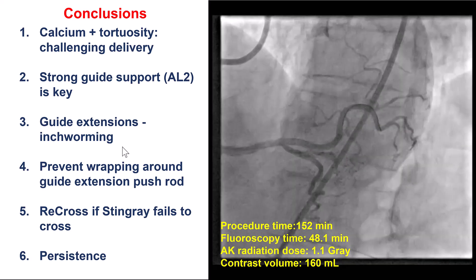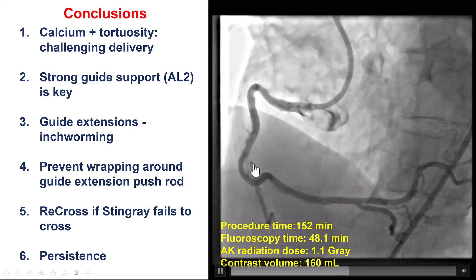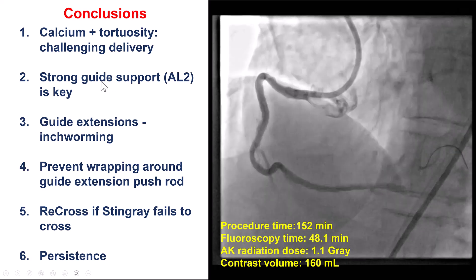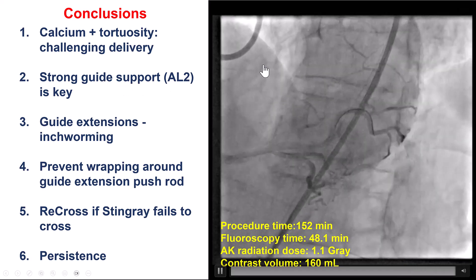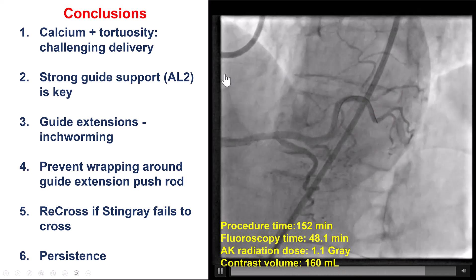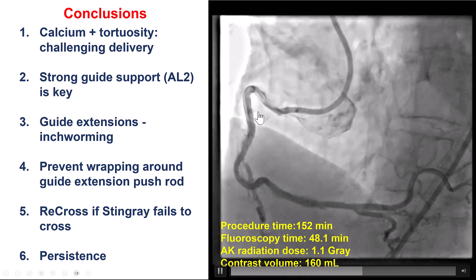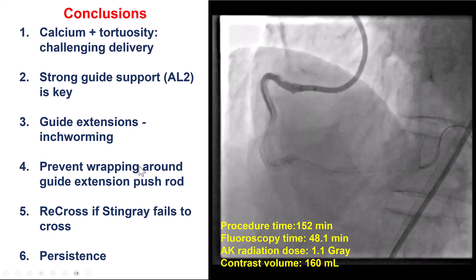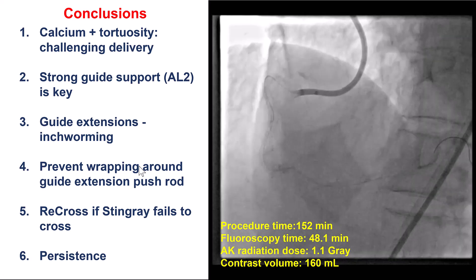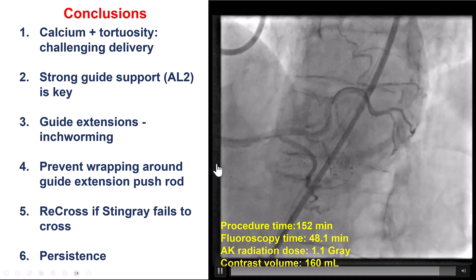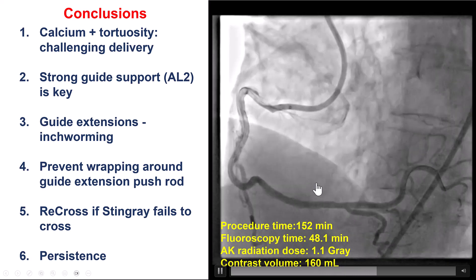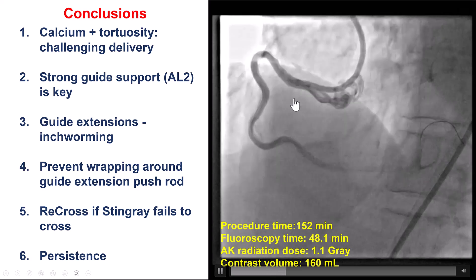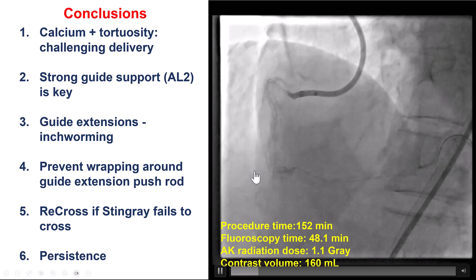In summary, this case demonstrates the adverse impact of calcification on tortuosity, with very extreme bends in the right coronary artery challenging both wire crossing and equipment delivery. For cases like this, there is no substitute for achieving very strong guide support — here the Amplatz Left 2 was advanced all the way to the tip of the Seferitz crook. Guide extensions delivered via inch-worming allowed wire and microcatheter delivery, enabling re-entry into the distal true lumen. It is very important to use a towel to minimize the risk of the wire wrapping around the pushrod. The ReCross can be used if the Stingray fails to allow distal re-entry. Persistence is also important — this procedure took almost three hours and 160 ml of contrast. Troubleshooting each step led to a final successful outcome.